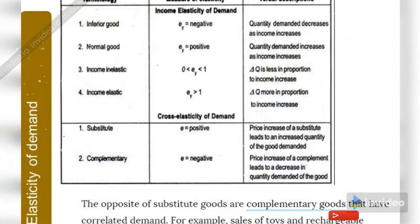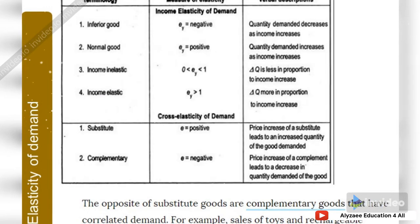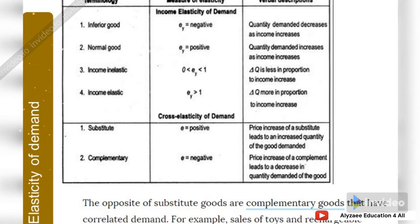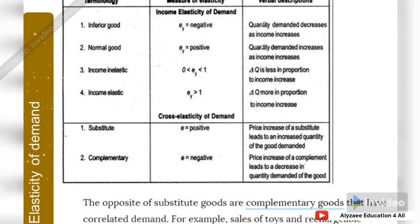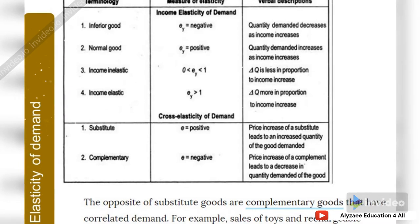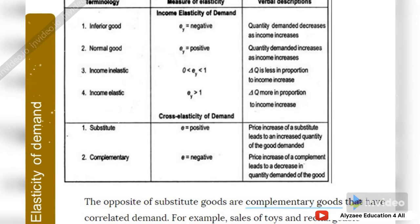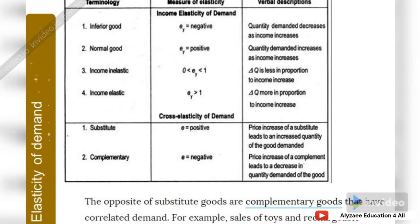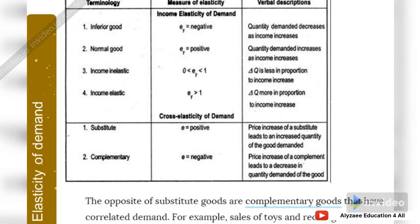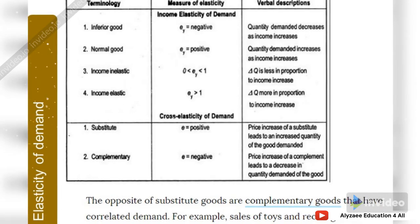In this slide we will discuss different ways to measure elasticity and verbal descriptions. For inferior goods, the income elasticity is negative — quantity demanded decreases as income increases. For example, you would set aside your old black-and-white TV or old-fashioned TV and switch to LED TVs.